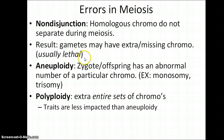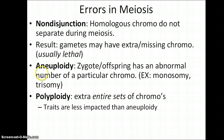Oftentimes this is lethal, so if a gamete is produced that has an abnormal number of chromosomes, when it fuses with another gamete from another parent to form the zygote, it's referred to as a non-viable zygote, so it will spontaneously abort early on. These circumstances where an individual chromosome is missing or found to have an extra copy is referred to as an aneuploidy.